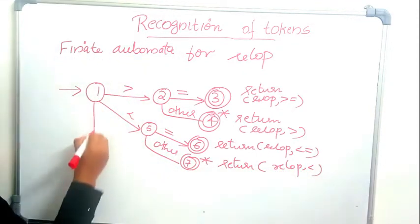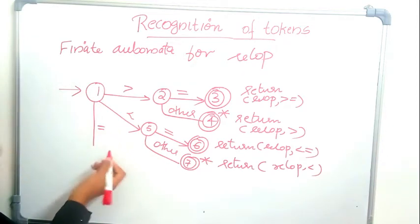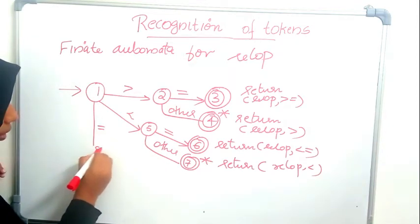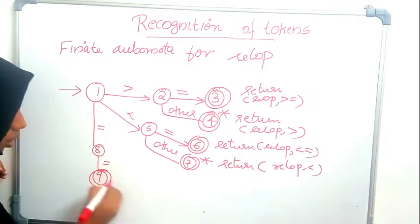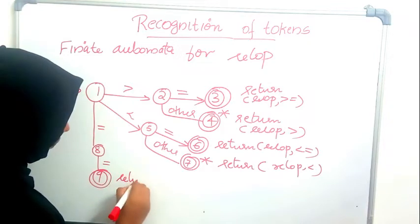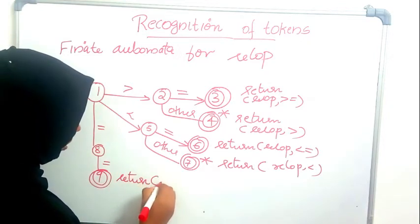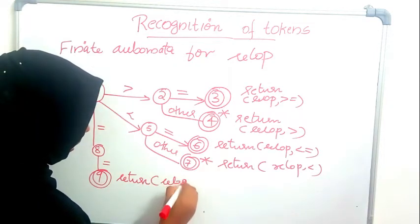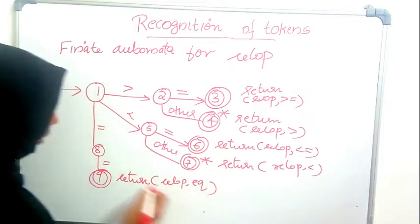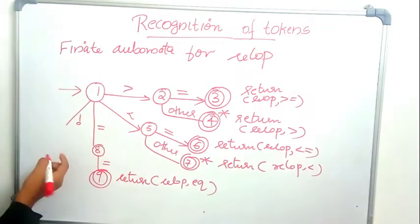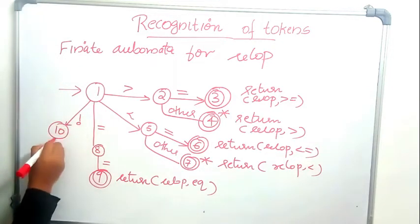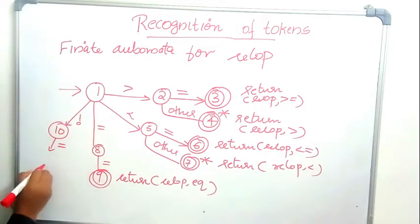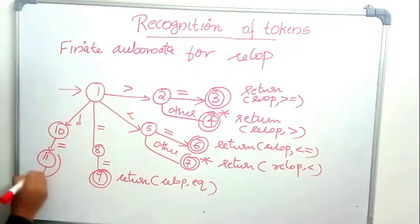If the automaton is reading an equal-to sign, it checks whether the next character is also equal-to. If yes, it returns relop comma 'equal to'. If the first character is not equal-to, the automaton moves one more state ahead to check the next character. If it matches, that becomes the final state for that token.